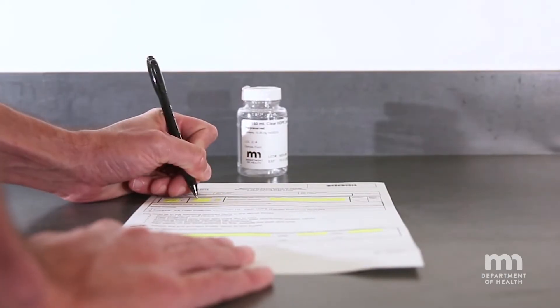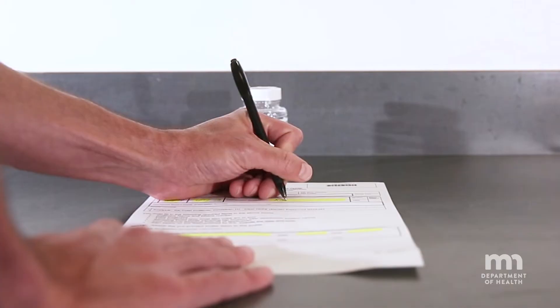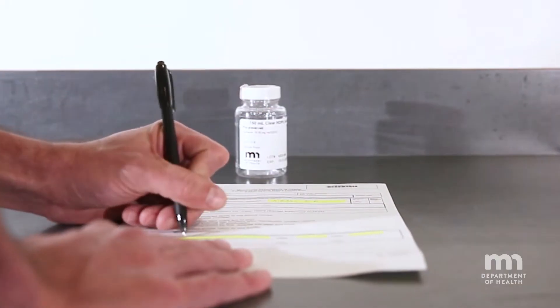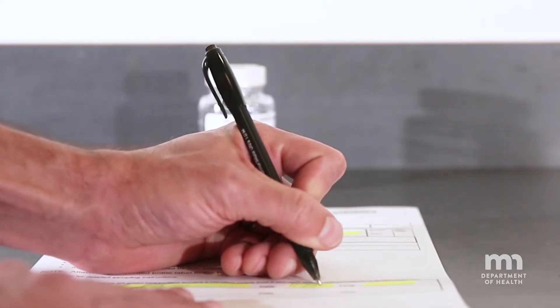Complete the chain of custody form with the name and number of the collector, date and time collected, chlorine residual if required, and then sign the form.